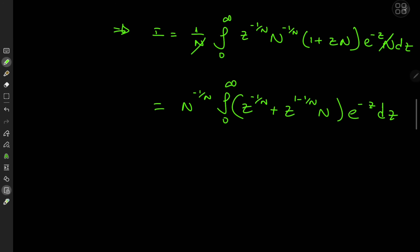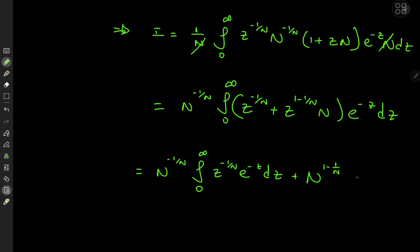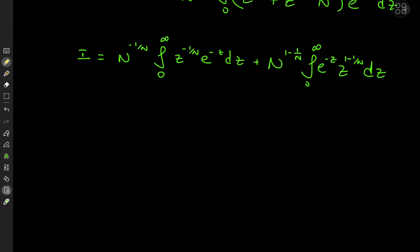Invoking the linearity of the integration operator, we write this as n to the negative 1 over n times the integral from 0 to infinity of z to the minus 1 over n times e to the minus z dz, plus n to the 1 minus 1 over n times the integral from 0 to infinity of e to the minus z times z to the 1 minus 1 over n dz. Long-time viewers of the channel know exactly what's going to happen next — we invoke the gamma function.